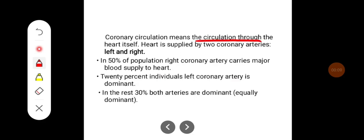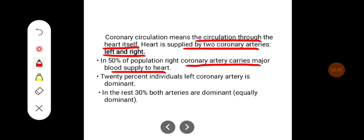Coronary circulation means circulation through the heart itself. The heart is supplied by two coronaries: left and right. In 50% of the population, the right coronary artery carries the major blood supply to the heart, whereas in 20% of individuals the left coronary artery is dominant. The remaining 30% have both arteries equally dominant.